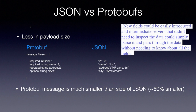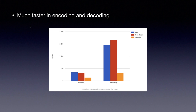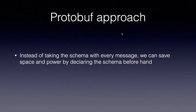A protobuf message is much smaller than JSON — almost 60% smaller in size — and it is much faster in encoding and decoding. If you look at the performance image shown here, you can see how much faster protobuf is at encoding and decoding compared to JSON, especially in decoding where it consumes very little time. Protobuf's approach is that instead of sending the schema with every message, you save space and processing power by declaring the schema beforehand.